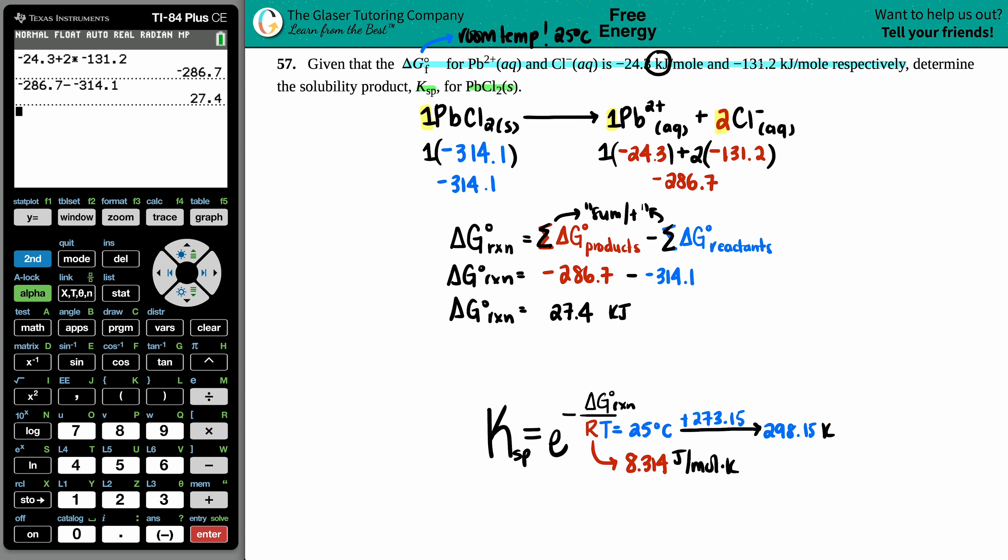The units are kilojoules because each value was in kilojoules per mole, but the coefficients were the mole values, so you're left with kilojoules. I could throw this number in, but the formula says only joules are allowed. Before I do that, I need to convert kilojoules to joules - just times by 1000, so 27,400 joules.